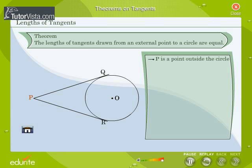P is a point outside the circle. PQ and PR are two tangents to the circle from P. To prove that PQ is equal to PR.